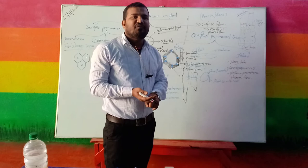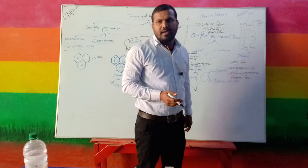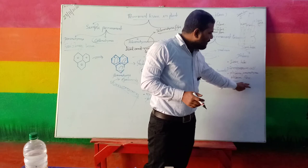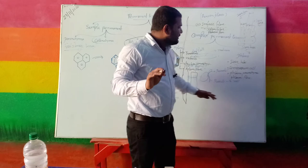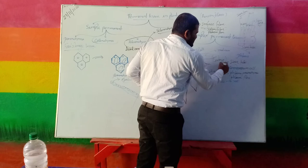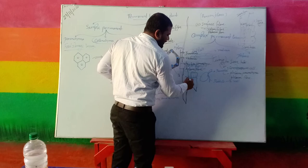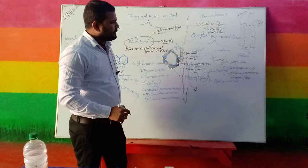Companion cells are always termed friend cells because they always associate with the sieve tube and help it perform its function. Living parenchyma cells associated with phloem are termed phloem parenchyma. Sclerenchyma fibers associated with phloem are termed phloem fiber. The first three elements — sieve tube, companion cell, and phloem parenchyma — are living, whereas in xylem, tracheids, vessels, and xylem fiber are non-living. Phloem helps transport food in plants.